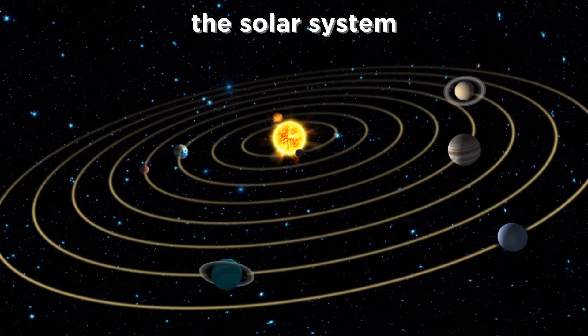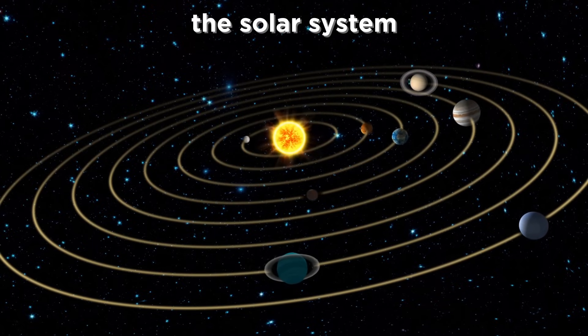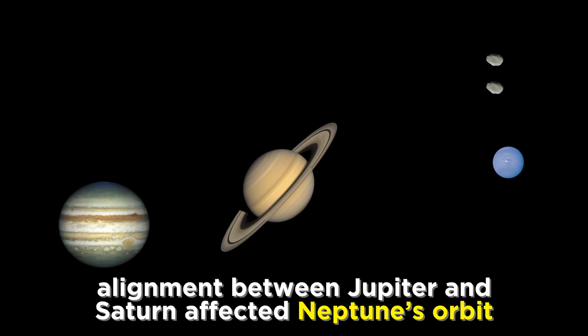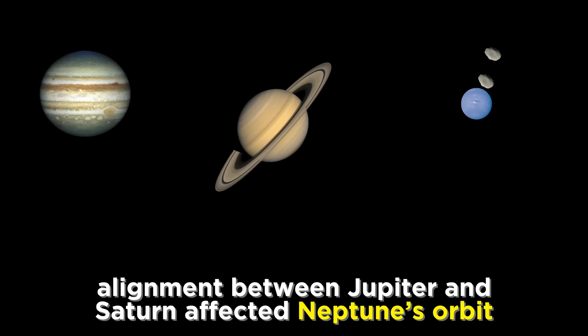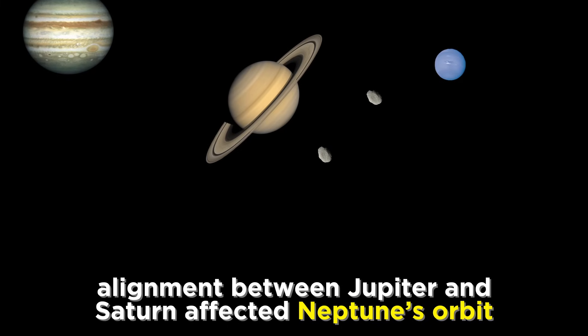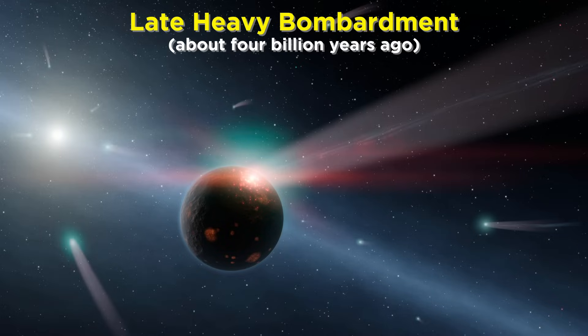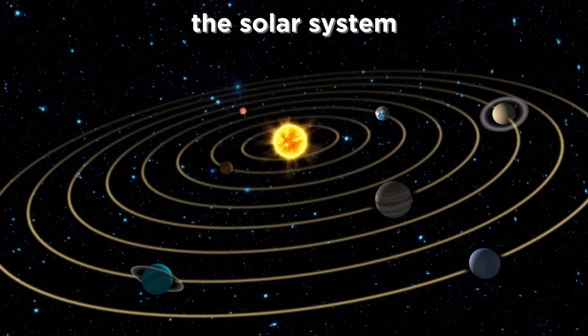Things have not been completely static since this formation. Objects are jostled around all the time, like a few billion years ago when Jupiter and Saturn lined up in such a fashion that Neptune's orbit altered, in turn sending small objects in the outer solar system towards the inner planets, raining down on them in an event called the late heavy bombardment. But for now, let's focus on the solar system as we see it today.